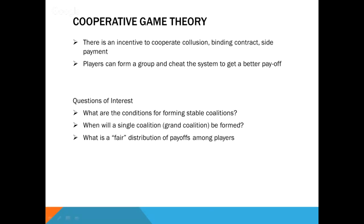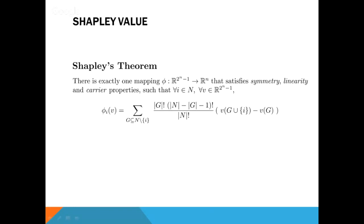Whatever mechanisms or analysis we perform, they should always be coalition-proof — given any group of people, they should not be able to get a better utility than what the social planner prescribes. Questions of interest include: what are the conditions for forming stable coalitions? When will a grand coalition be formed? What is a fair distribution of payoffs among players? To answer this, we have a solution concept called the Shapley Value. Shapley's theorem says there is a unique expression satisfying the desirable properties of a cooperative game.